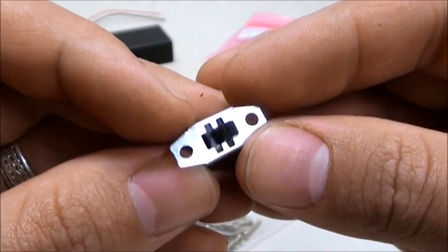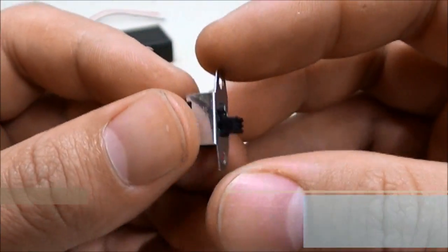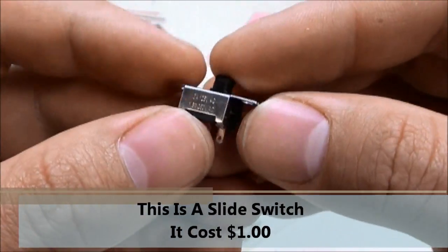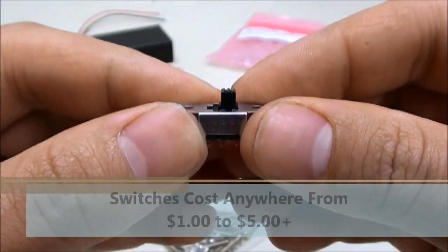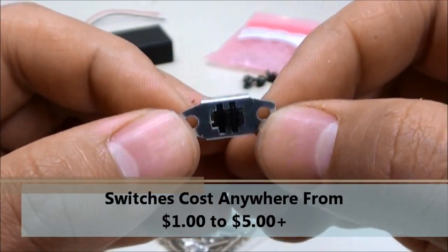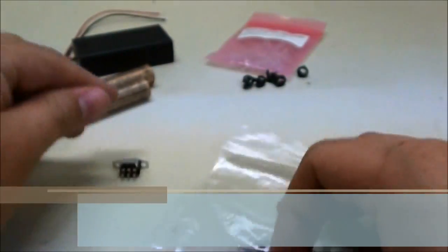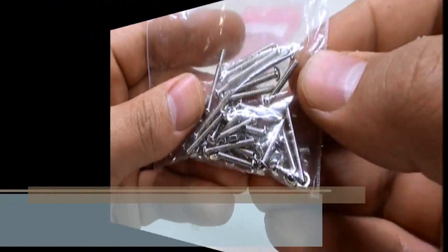You're obviously going to want to have control over when your LED lights are on and off, so you're going to need a switch. I just chose this simple small slide switch. It only cost me a dollar. Switches vary anywhere from a dollar to five dollars in price and they come in a pretty large assortment. You're also going to need some screws and nuts in order to install the switch.